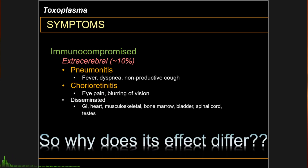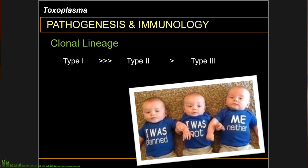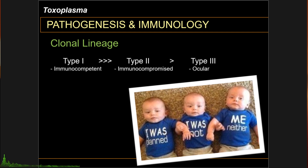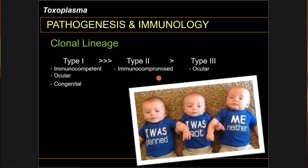Why are there varying degrees of symptomatology associated with Toxoplasma? One point to consider is the clonal lineage of Toxoplasma. So far, there are three types. Type 1 is the most virulent among the three. Type 2, however, is the most commonly seen form in humans and is more commonly isolated, and is also more commonly seen in immunocompromised individuals. Type 1 is more associated with the congenital form of toxoplasmosis.